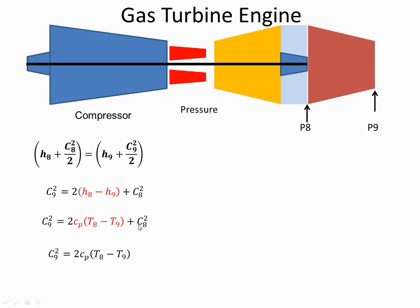And then if we assume that the velocity at 8 here, this position, if we assume that that is so low, the aircraft has expanded but it hasn't got much velocity yet. So if we assume that that is practically zero or is zero, we can simplify the equation for the velocity at the exit to be 2Cp times T8 minus T9.